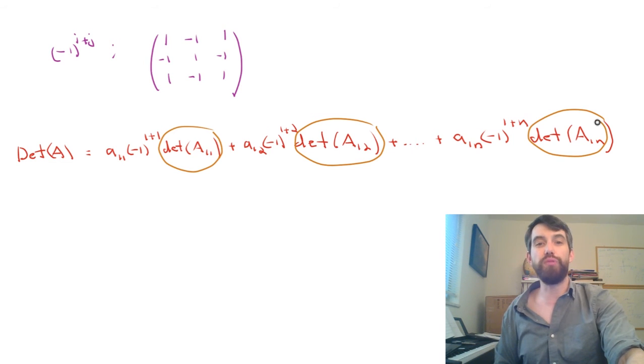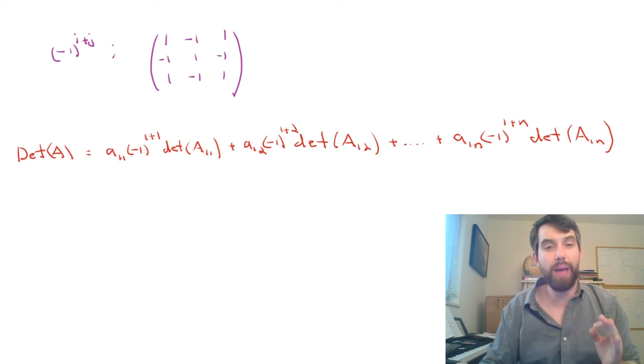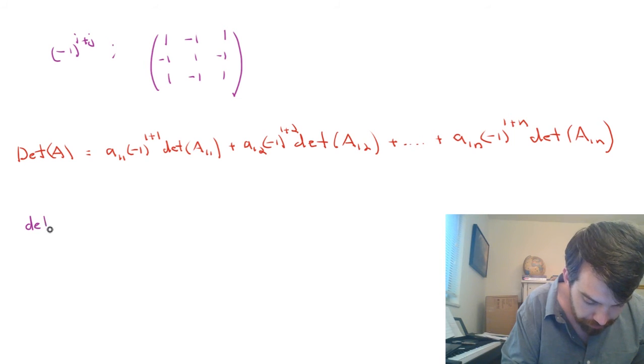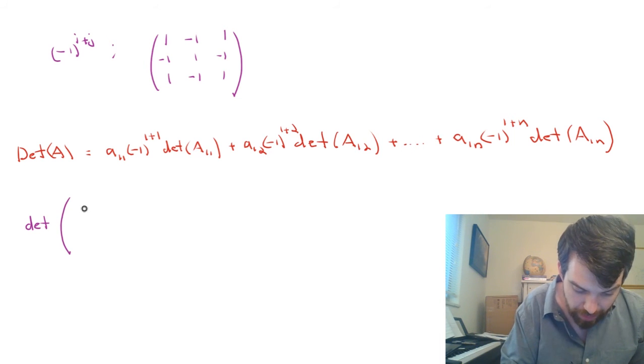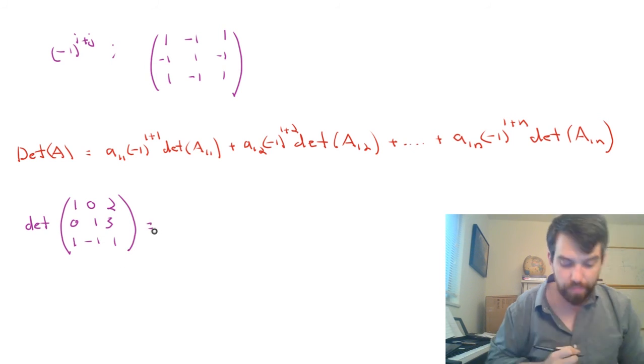Alright, so let's see if we can compute this out for a specific example and we'll start to get a quick sense of a pattern of how this works. So let's take the determinant of the matrix 1, 0, 2, 0, 1, 3, 1, minus 1, 1. I just made up some numbers here.